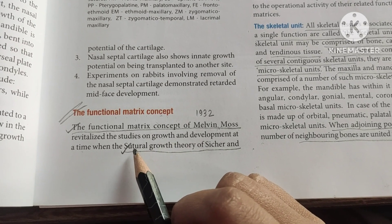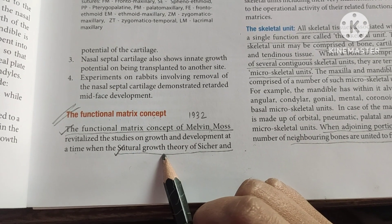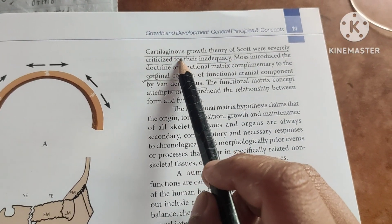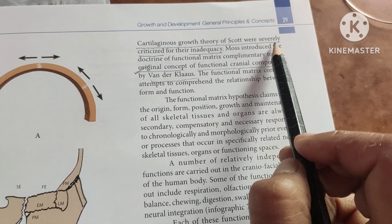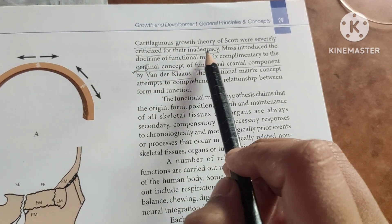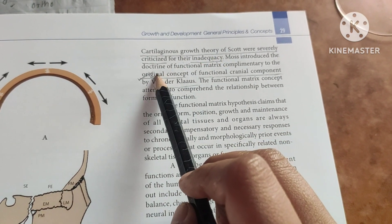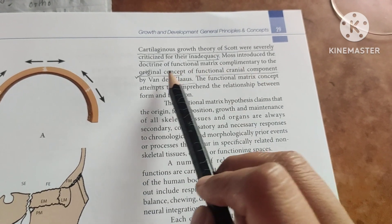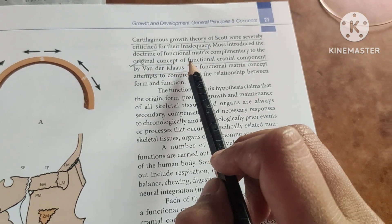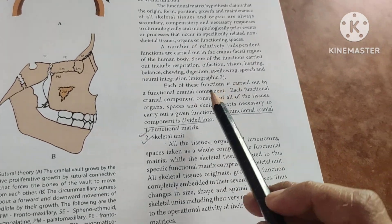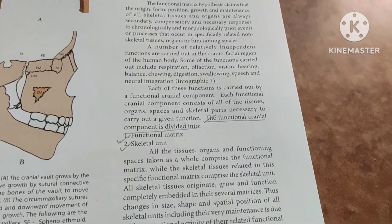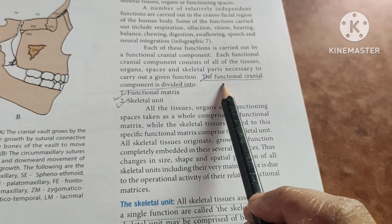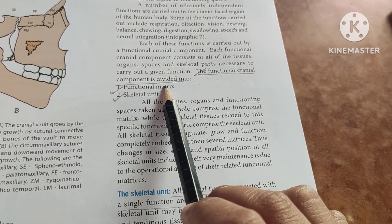This was developed after the sutural theory of Sicher and the cartilaginous growth theory of Scott were severely criticized for their inadequacy. It was actually the original concept of the functional cranial component by Van der Klaauw. Now, we need to understand the functional matrix concept, where the functional cranial component is divided into the functional matrix and the skeletal unit.